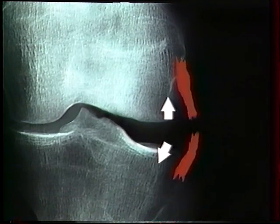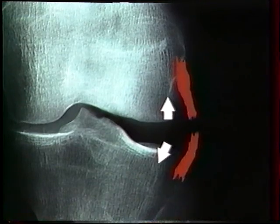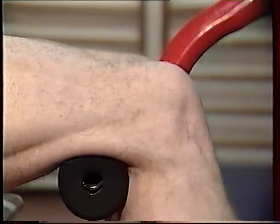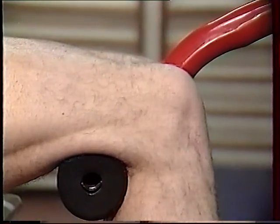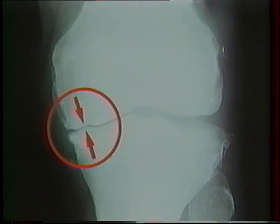L'entorse bénigne se traite par du repos et des soins anti-inflammatoires. Malheureusement, l'entorse peut être plus grave. Il faut alors être prudent : plâtre et rééducation, voire une opération chirurgicale en cas de déchirure complète. Le but est d'éviter les séquelles douloureuses et d'assurer une nouvelle stabilité au genou, importante pour reprendre le football et préparer le genou à toutes ces sollicitations.